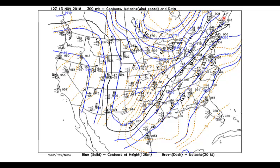What that actually means is that air molecules are also spreading out — they're diverging. It's like what would happen if a bunch of people were in a room and they all ran out one door at the same time. They're going to converge at the door, and as soon as they get to the other side they're going to diverge — they're going to spread out.